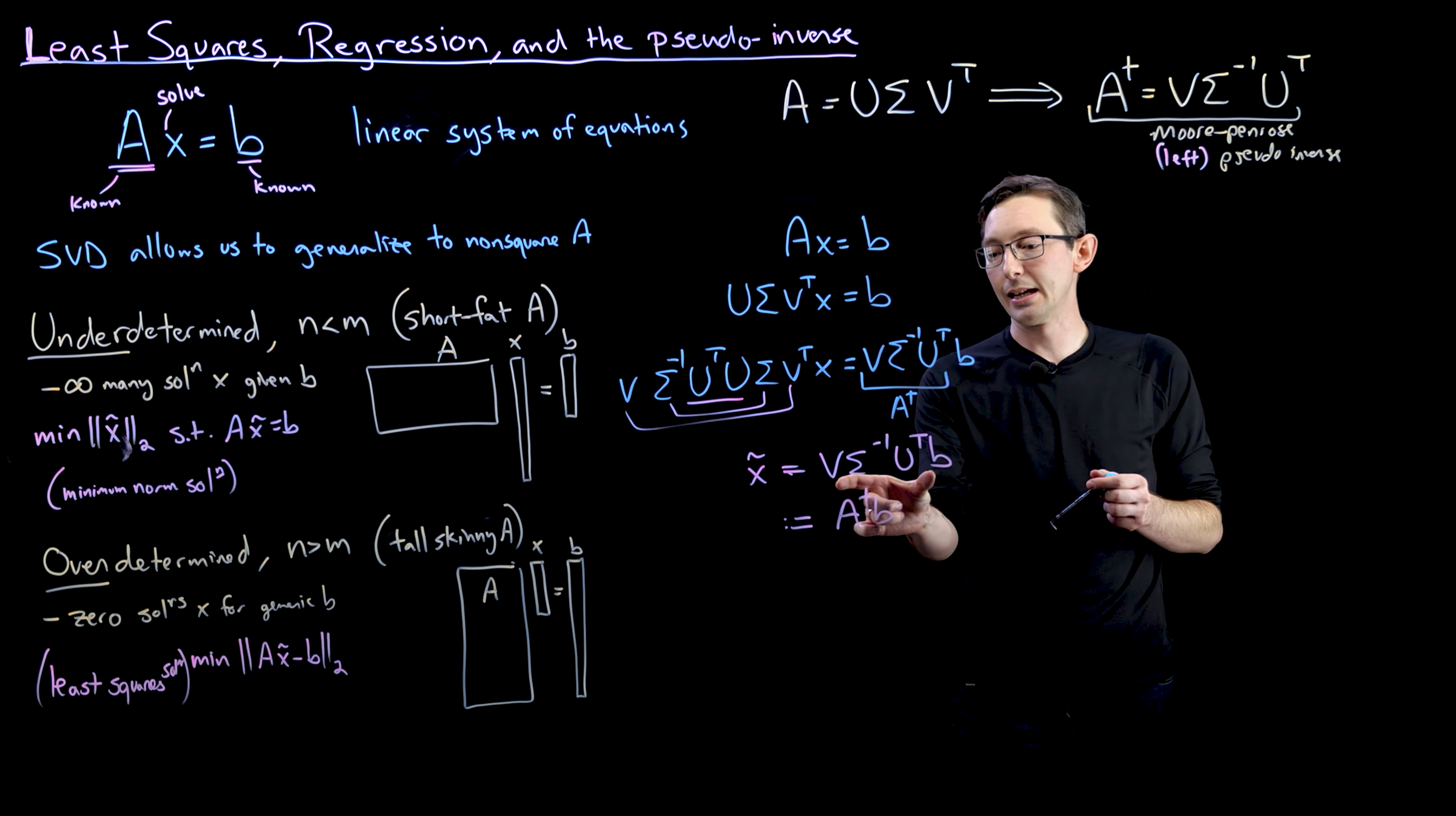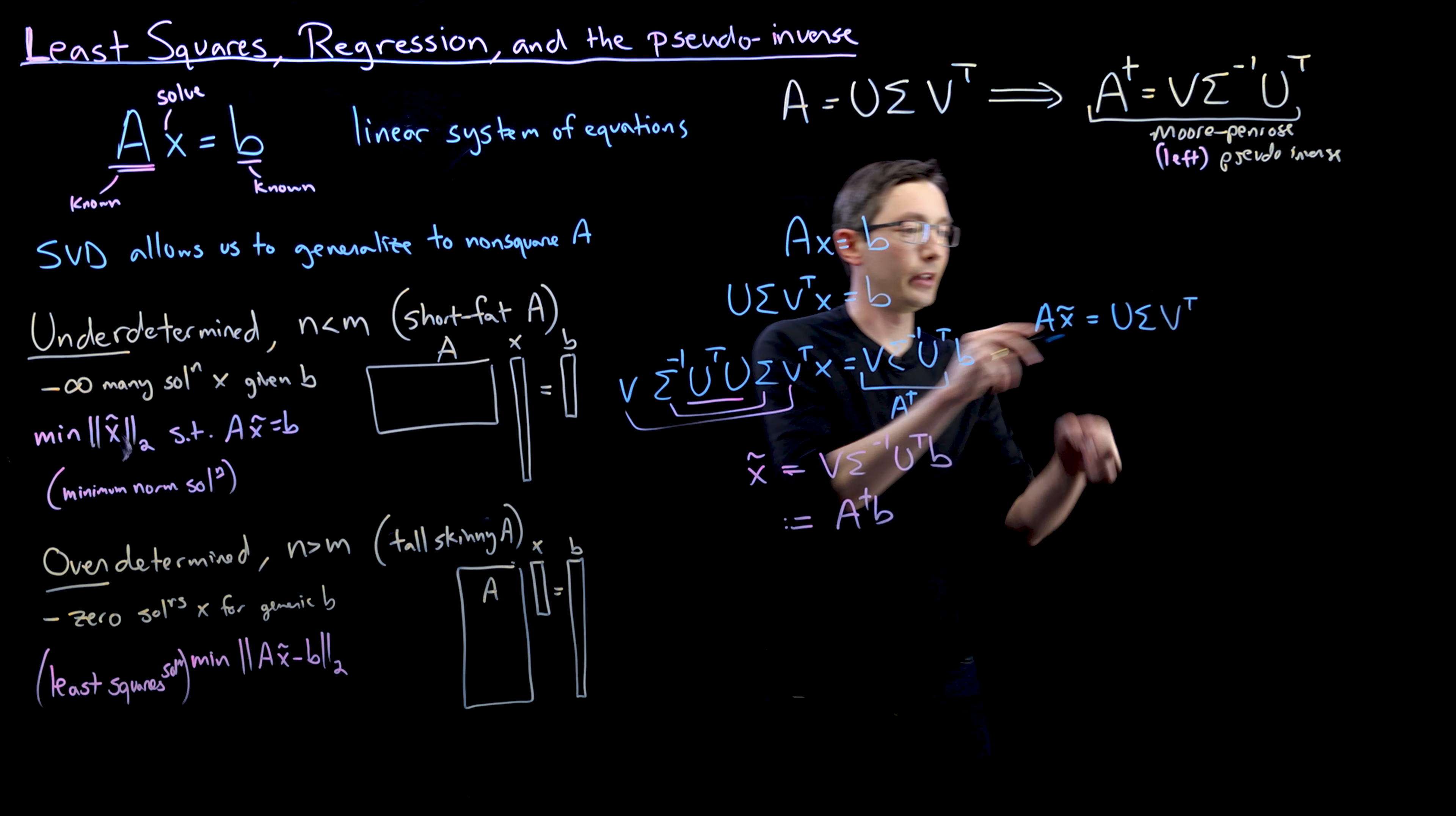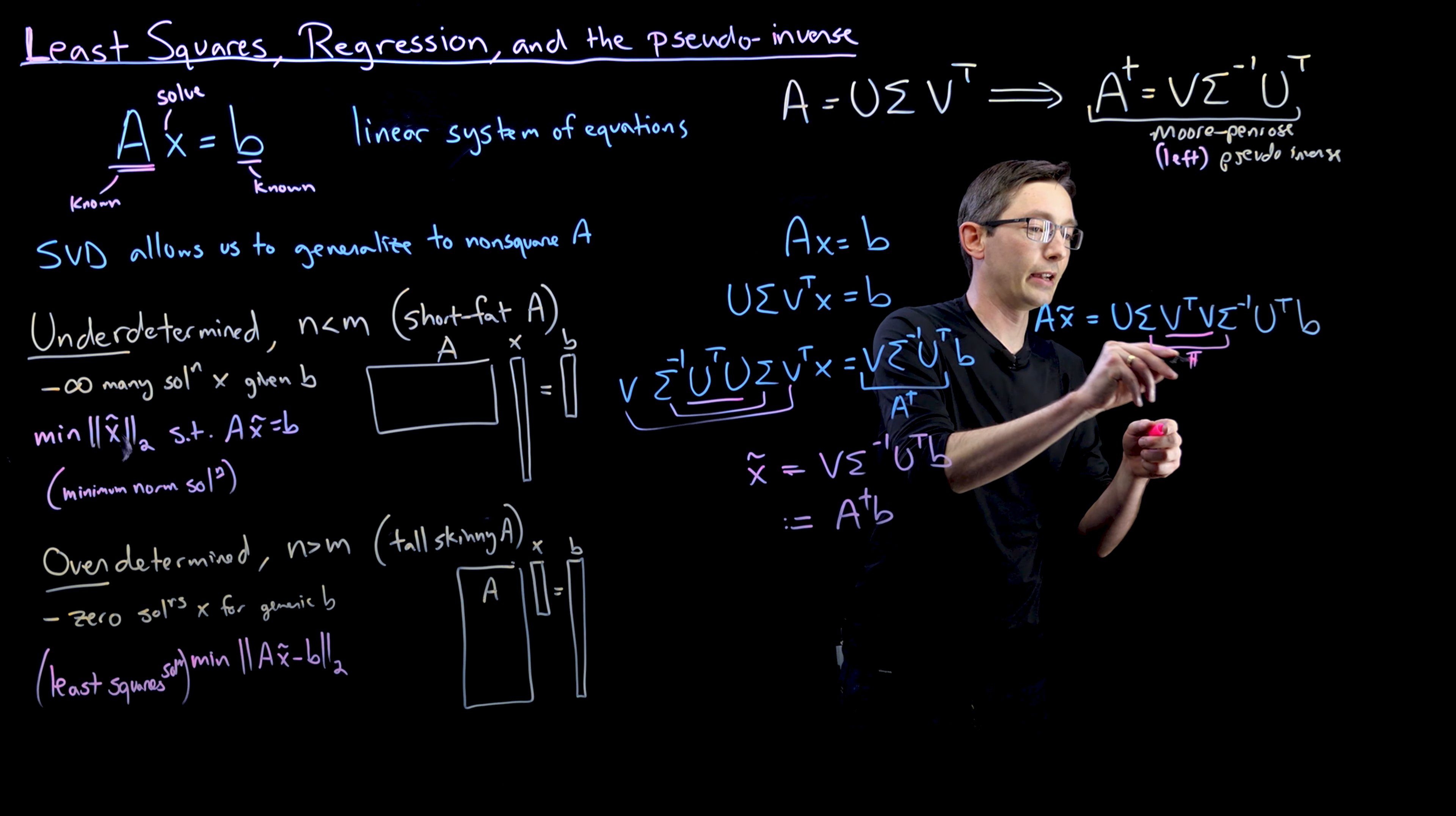So what we're going to do is take this expression for x tilde and plug it back into Ax equals B. So we're going to take Ax tilde. Now A is equal to U sigma V transpose, and x tilde is V sigma inverse U transpose B. It looks like this might actually all cancel out, because there's a lot of V V transposes and sigmas. This is definitely the identity. Sigma, sigma inverse is also the identity.